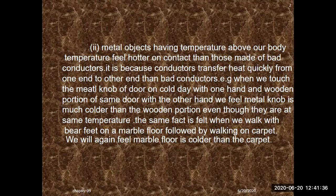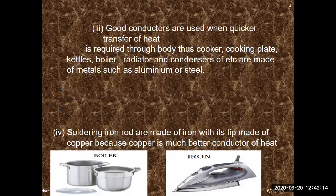These are some of the most important applications of the conduction of heat. Good conductors are used when quicker transfer of heat is required. Thus, cooking plates, kettles, boilers, radiators, and condensers are made of metals such as aluminium or steel. Soldering iron rods are made of iron with a tip made of copper, because copper is a better conductor of heat — the faster the heat transfer, the better the conductor needed.